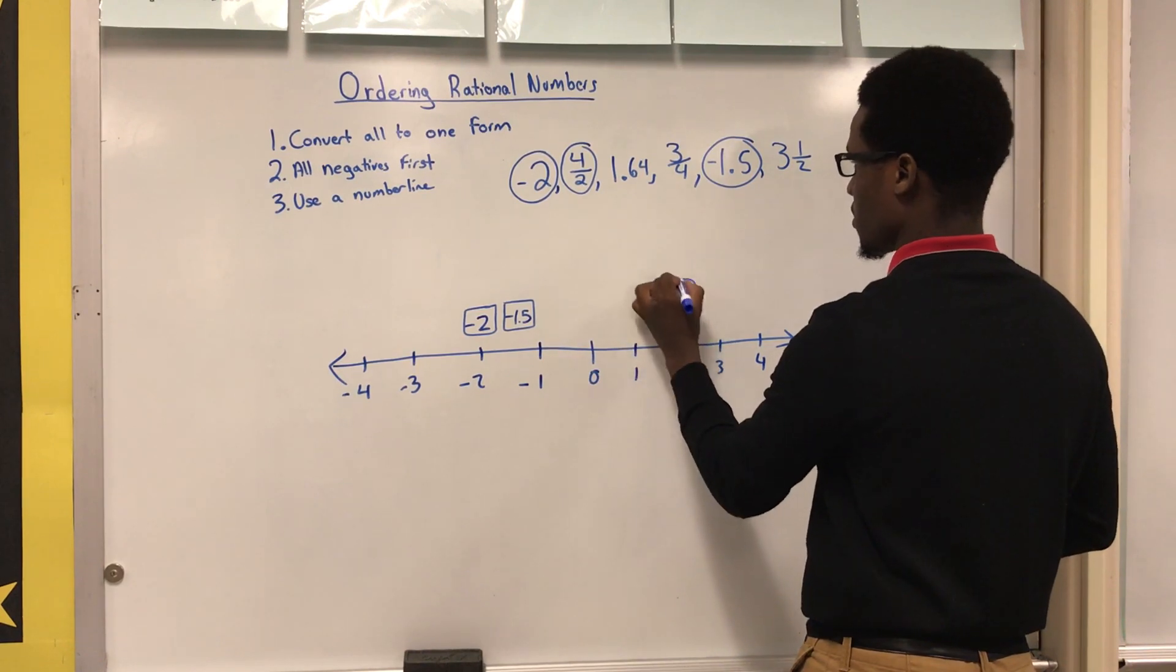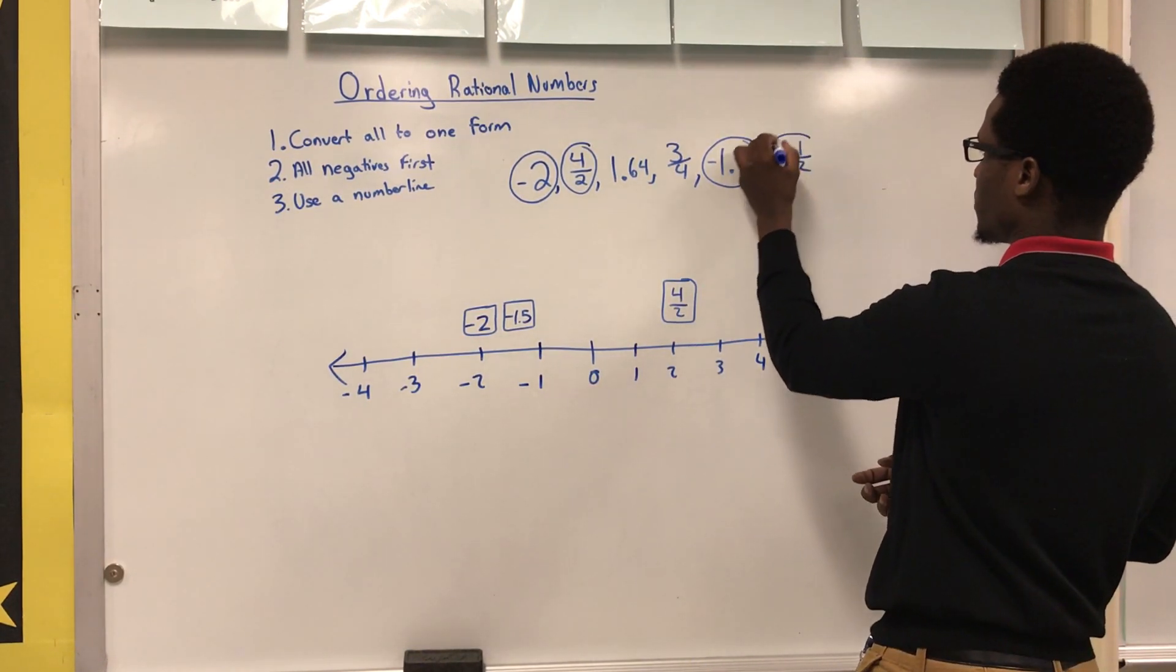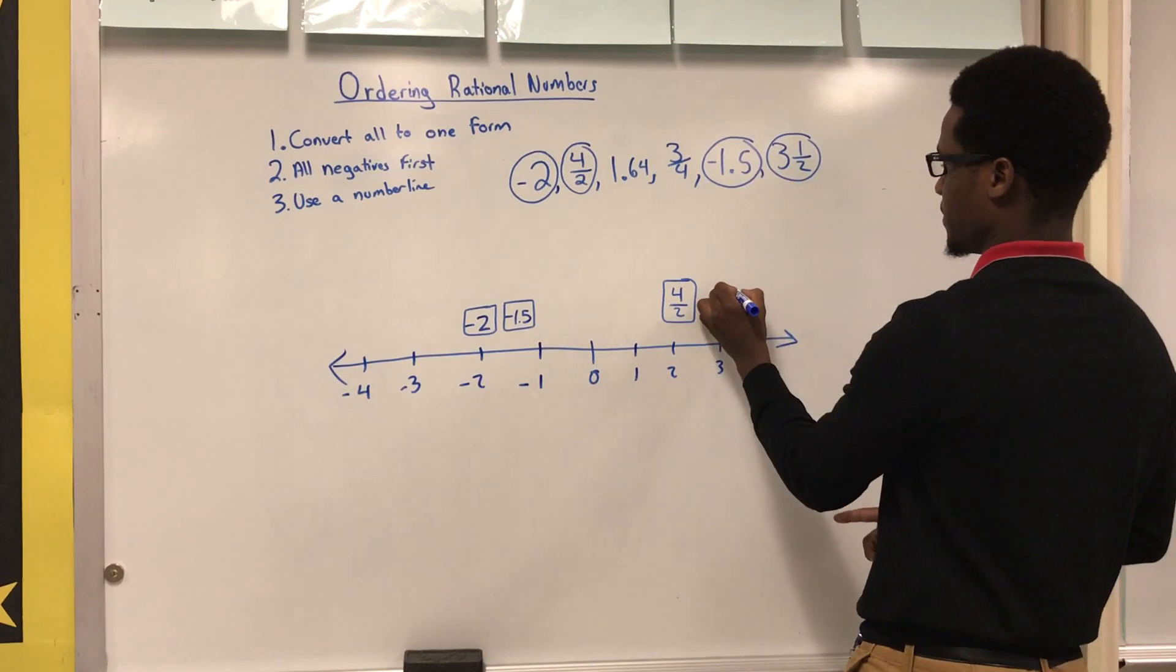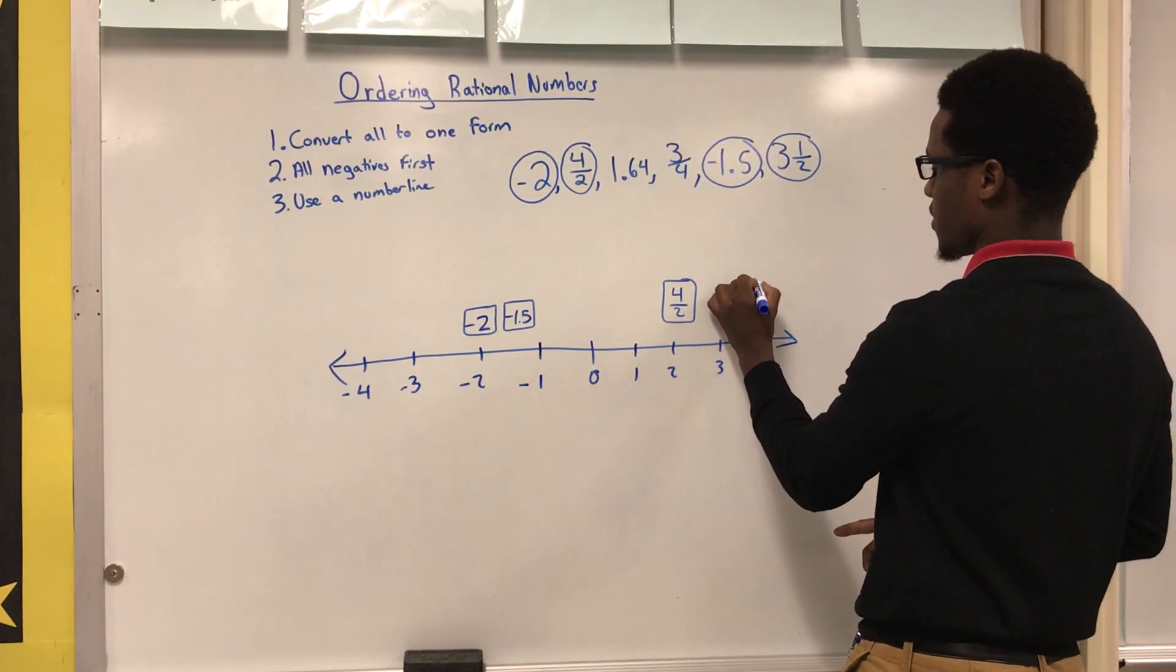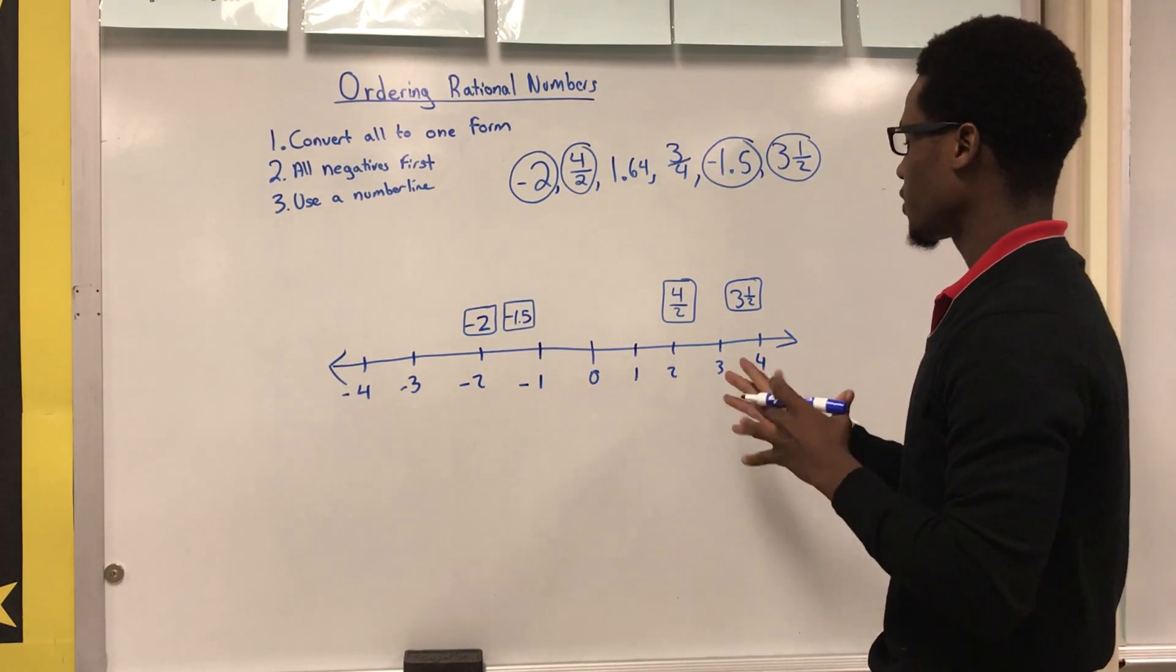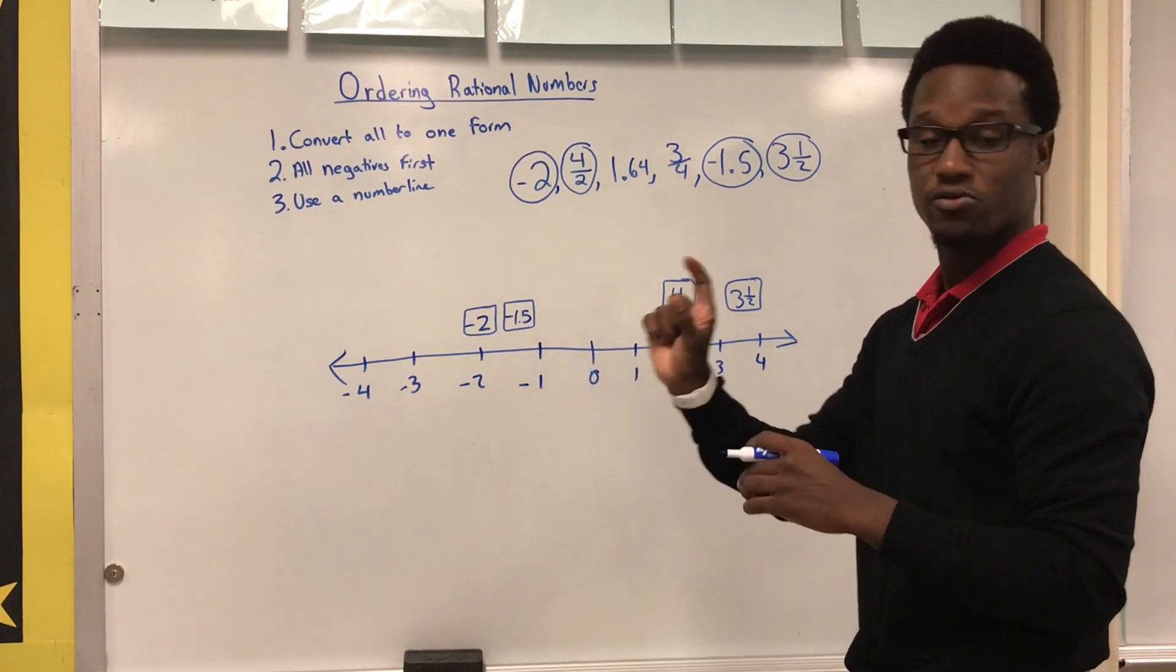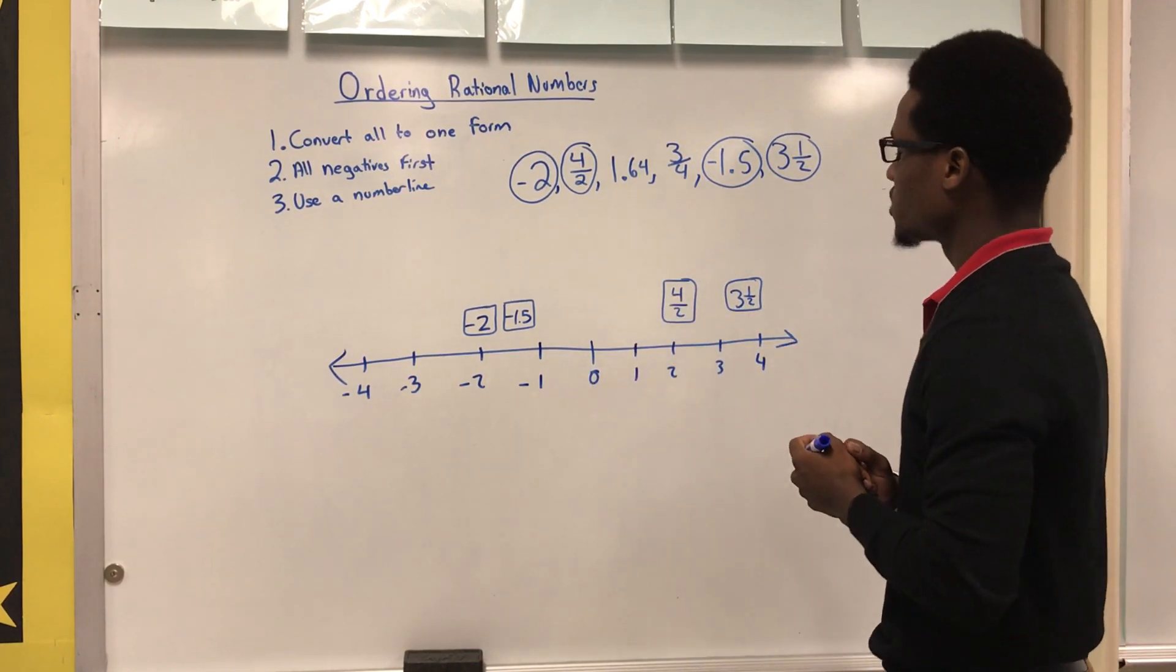The next thing is going to be three and a half, so three and a half is located between three and four. So three and one half. As you can see, this number line really helps figure out the correct positioning. And after this number line is finished, it's simply just writing them down in order.